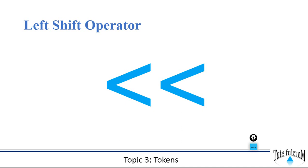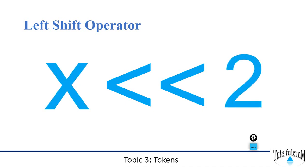The left shift operation takes two numbers and left shifts the bits of the first operand; the second operand decides the number of places to shift. For example, X left shift two shifts the data X towards the left by two bit positions. Let's take an example to understand this.